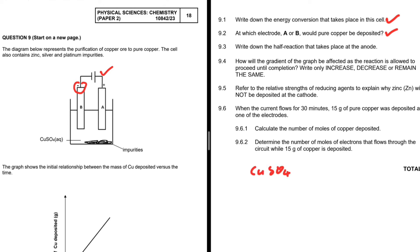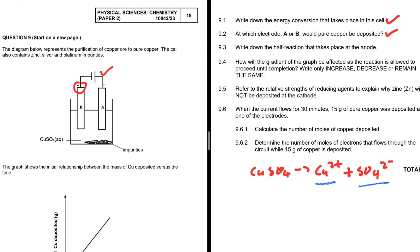We have CuSO₄, which breaks down to form Cu²⁺ plus SO₄²⁻. Cu²⁺ is a positive ion and SO₄²⁻ is a negative ion. The positive ion will get attracted to the negative electrode, which is B, and that's where reduction takes place. Pure copper is deposited at B because positive and negative attract.